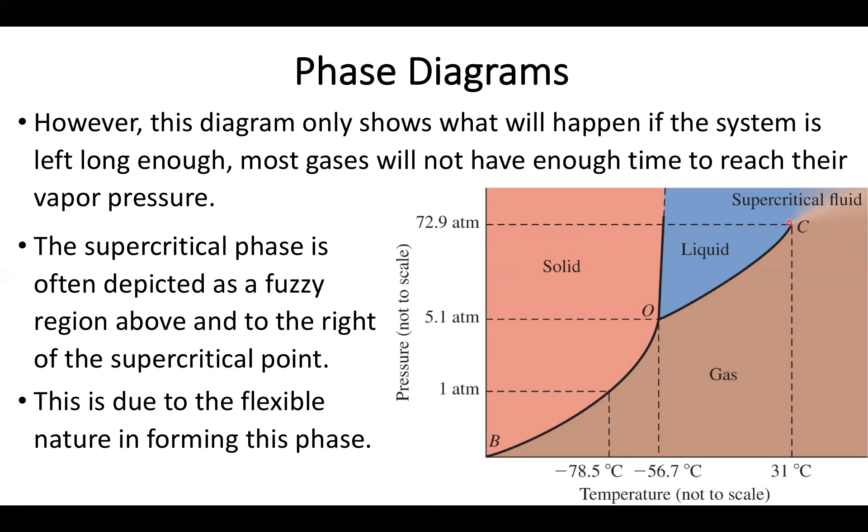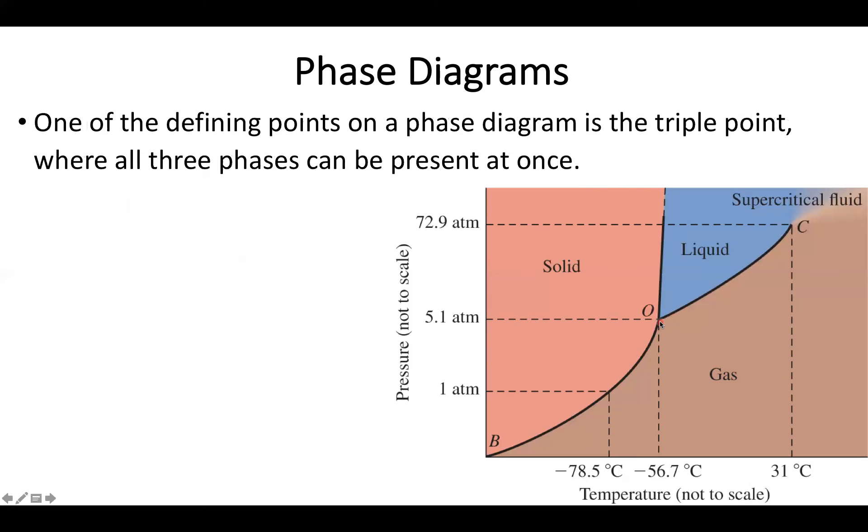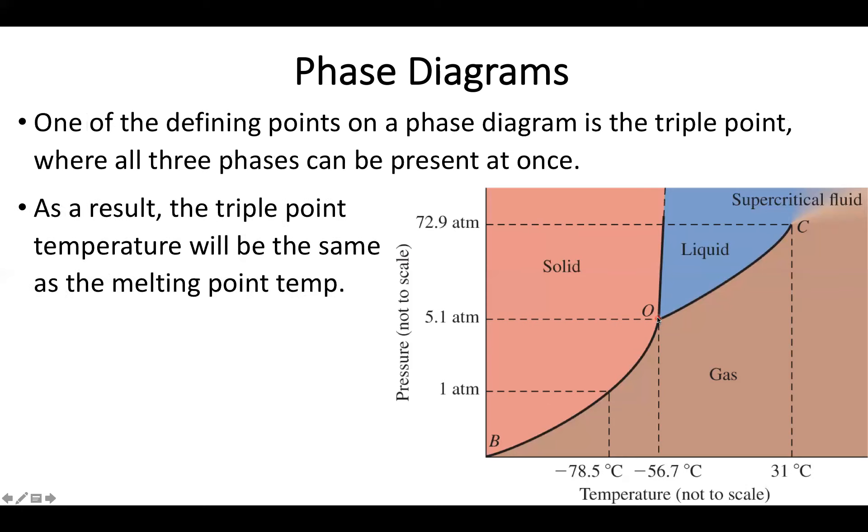One of the other really important defining points besides the supercritical point is what's called the triple point. This is where my solid-liquid, my liquid-gas, and my solid-gas phases all come together. So whenever I'm at the triple point it means that all three phases are present at once. This seems like a very odd sort of point but it turns out it happens all the time.